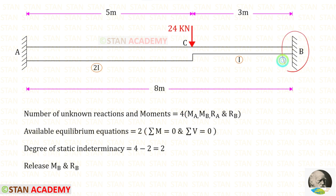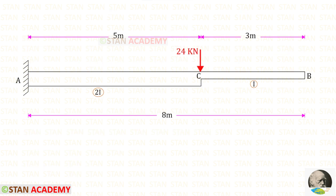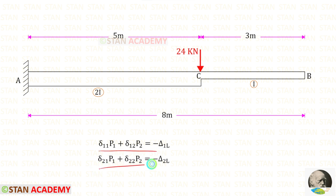From support B, let us release MB and RB so that point B becomes a free end. In the two compatibility equations, to find the displacements, we are going to use the unit load method. In the unit load method, first we have to find the moment M, and for that we have to make sections.